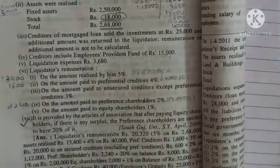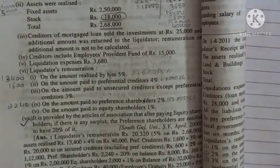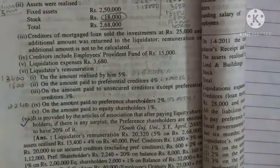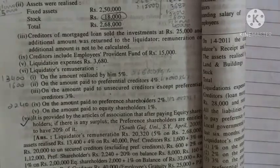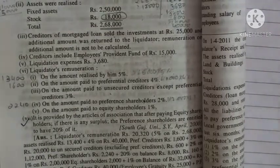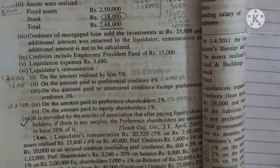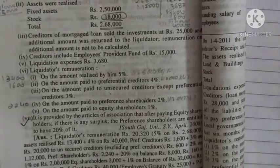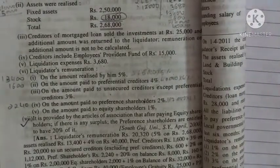The liquidator's remuneration should also come from the amount paid to the preference shareholders. This is the most important point in this kind of sum. Until the payment to unsecured creditors, we do it the same way as before. This new point is added at the end: if extra surplus remains, generally it goes to equity shareholders, but here there are different provisions, so we will calculate accordingly. Let's start the calculation.